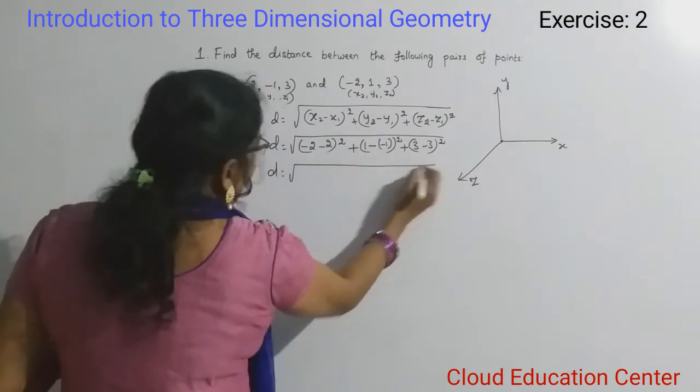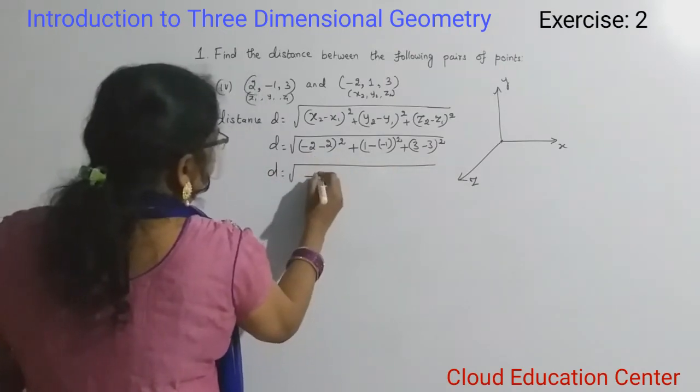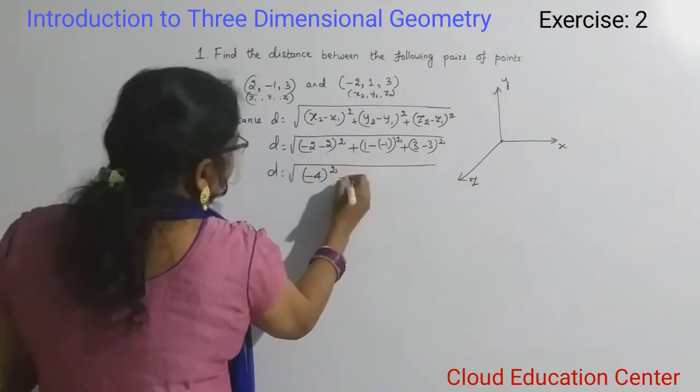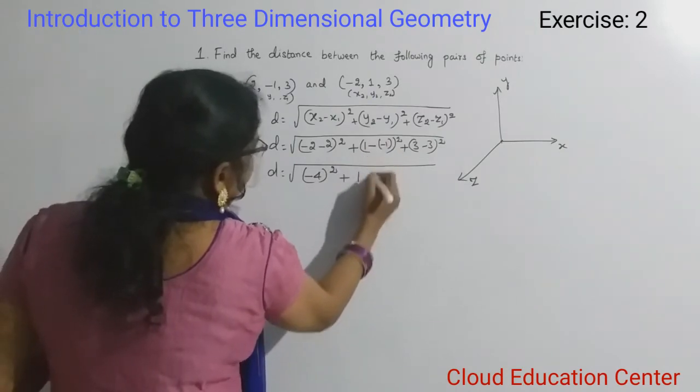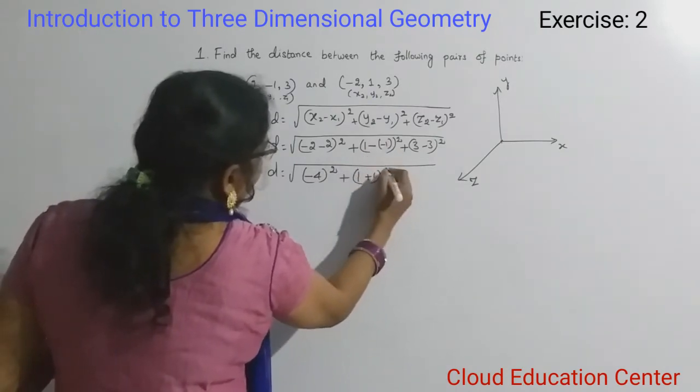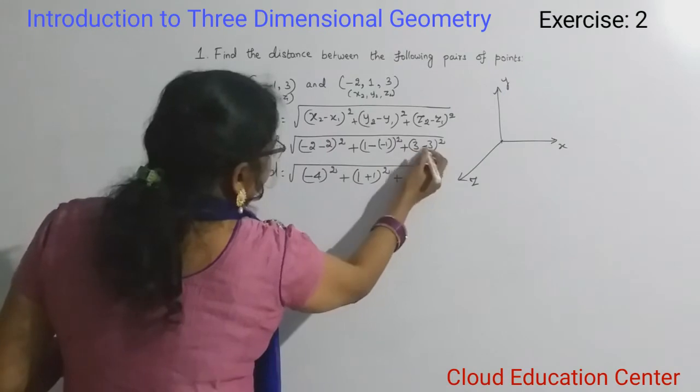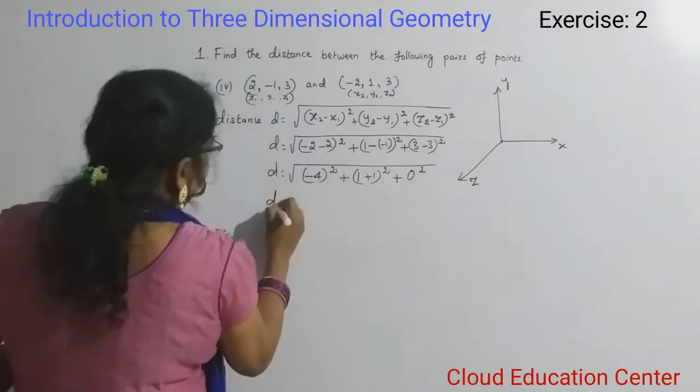So D equals square root of: negative 2 minus 2 becomes minus 4, the whole square, plus 1 minus negative 1 becomes plus 1, the whole square, plus 3 minus 3 is 0, squared.